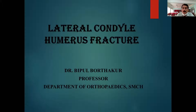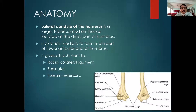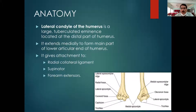The lateral condylar fracture of the humerus happens mainly in children. Anatomically, we do not actually have a lateral condyle in the humerus as such — we know condyles in the femur and tibia, but not the humerus. In the distal end of the humerus we have the lateral epicondyle, capitulum, and medial epicondyle — these are epicondyles, not condyles. The lateral condyle of the humerus refers to a large tuberculated eminence located in the distal part of the humerus towards the lateral side.